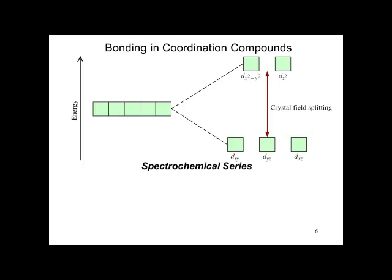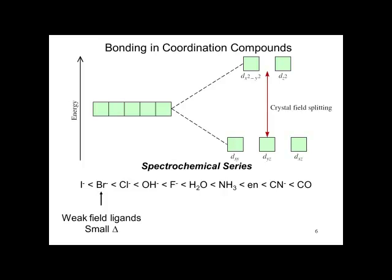Looking again at bonding and coordination compounds, there arises from these ligands what is called a spectrochemical series. The strong ligands are CO, cyanide, and ethylenediamine. The weak ones are the halogens on the left. Weak field ligands have a small delta — the energy difference between the lower and upper d-levels is small. With strong field ligands, the energy difference is large.